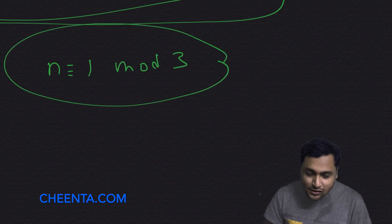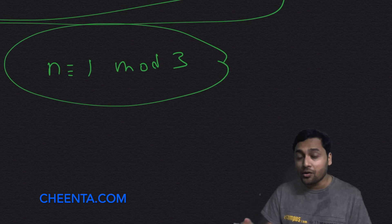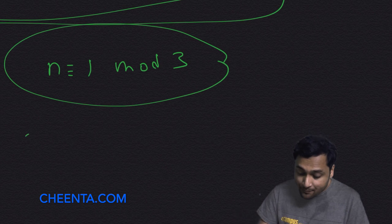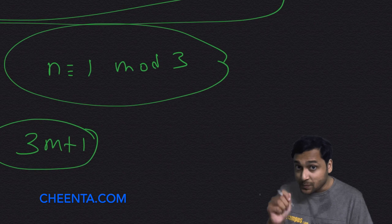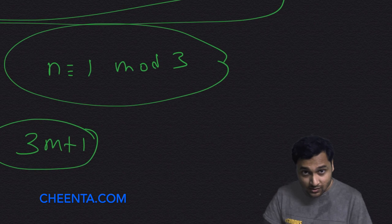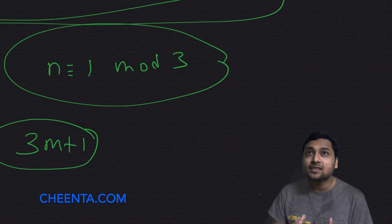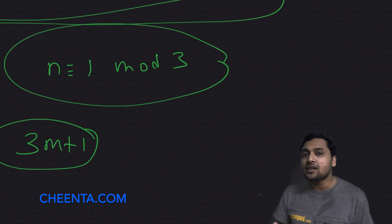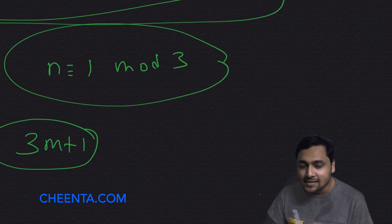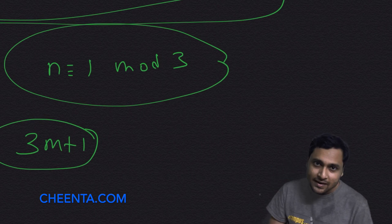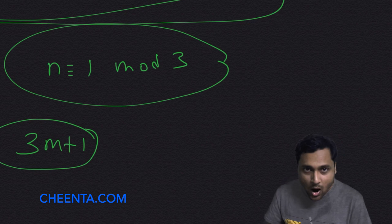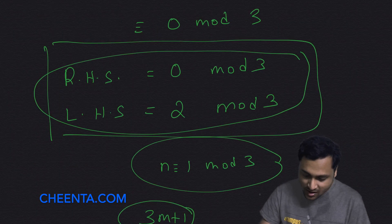So no numbers of the form 3m plus 1 can be a solution to this particular equation. If a number is 1 mod 3, what that essentially means is: if you divide the number by 3, the remainder will be 1.